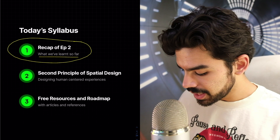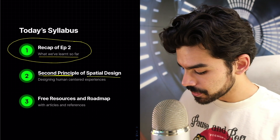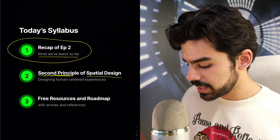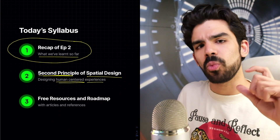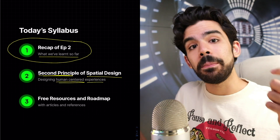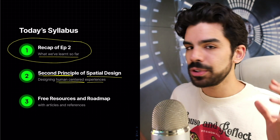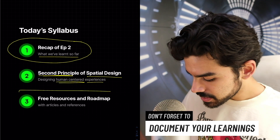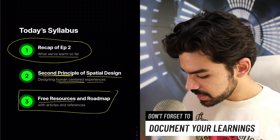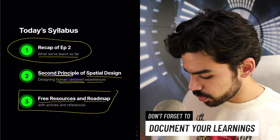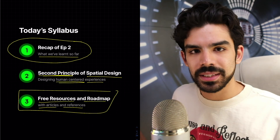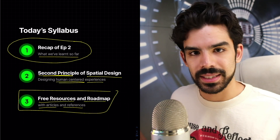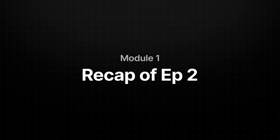In module two we'll understand the second principle of spatial design, which is about designing human-centered experiences — what that means and how to implement it when designing apps for the Vision Pro. Then in the last module I'll share some free resources, roadmaps, articles, and references you can use to implement this advice in your own Figma files. Let's start with module one — the recap of episode two.